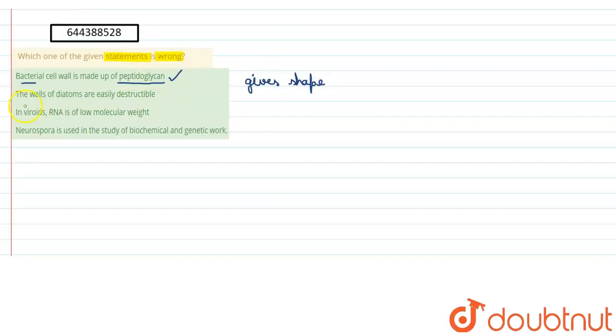Let's see the next one. It says that the walls of diatoms are easily destructible. Now what are basically diatoms? They are the unicellular algae. That means they are the eukaryotic organisms. They are basically eukaryotes and they are found in the oceans.